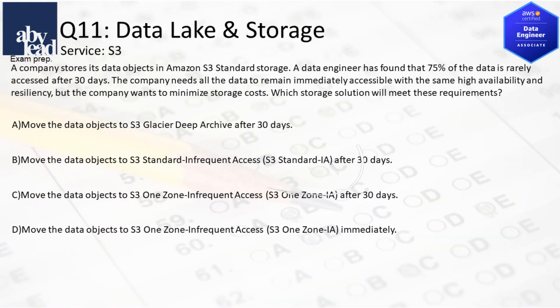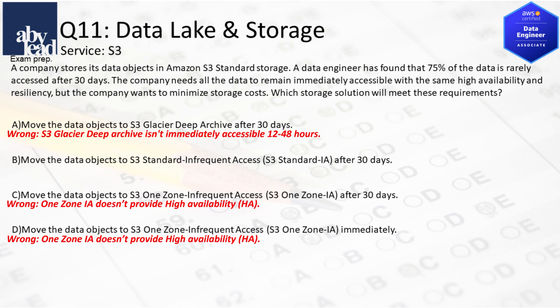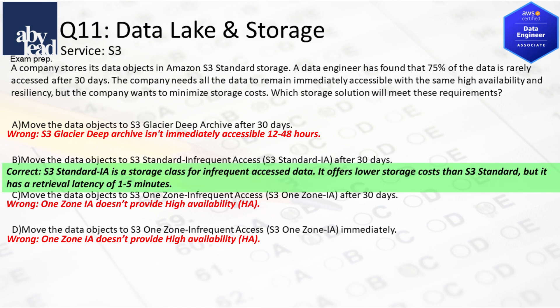Question 11: How do you realize a cost-efficient and highly available S3 storage solution with infrequent access after 30 days? S3 Glacier Deep Archive isn't immediately accessible, taking 12 to 48 hours. The One Zone class doesn't provide high availability. Instead, use S3 Standard storage for infrequent access with lower storage costs but also larger retrieval time.